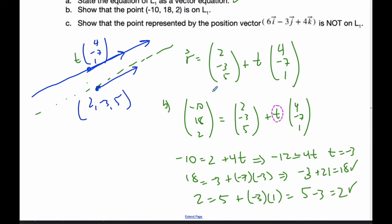Therefore, this point is on the line because our parameter is consistent for all three components x, y, and z.